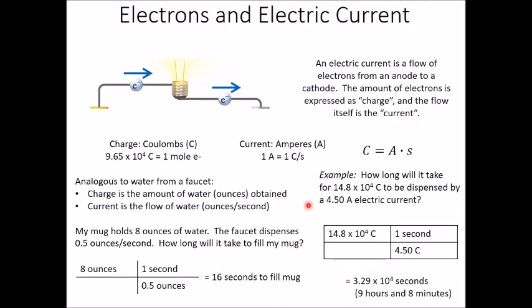Electric current works the same way. How long will it take for 14.8 times 10 to the 4th coulombs of charge to be dispensed by a 4.50 ampere electric current? Well, we start with our 14.8 times 10 to the 4th coulombs. We use ampere as our conversion factor, 4.50 coulombs per second. So we divide the coulombs by the coulombs. We get seconds left, 3.29 times 10 to the 4th seconds, or nine hours and eight minutes.